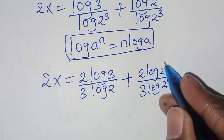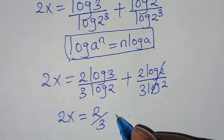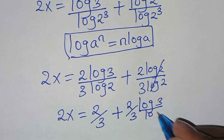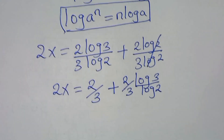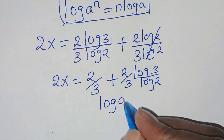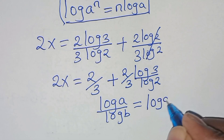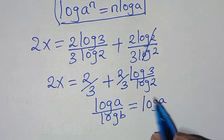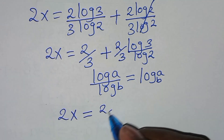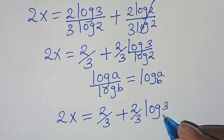Simplifying, the log 2 terms cancel in the second fraction, giving us 2x equals 2/3 plus (2/3)·(log 3 over log 2). Now, log 3 divided by log 2 is in the form of log a divided by log b, which we can transform as log a to base b. Applying this change-of-base property, 2x equals 2/3 plus (2/3)·log₂3.